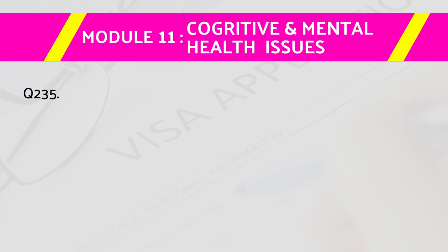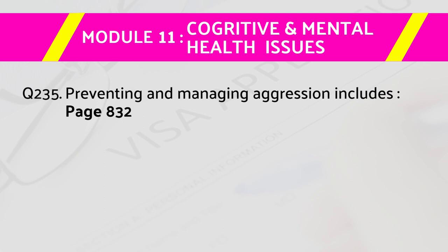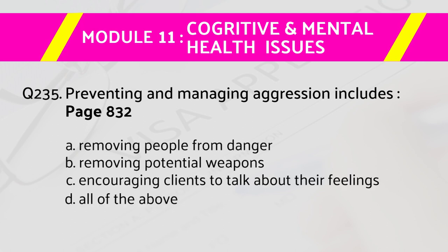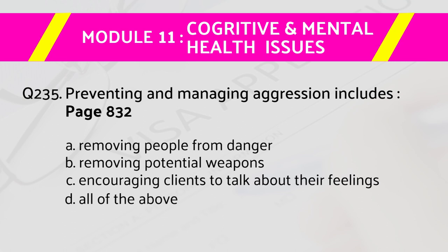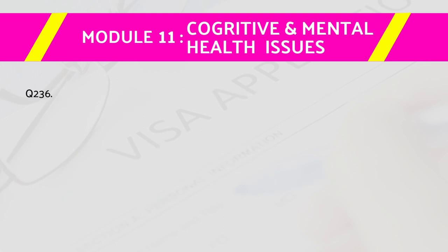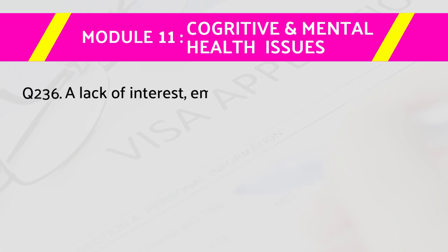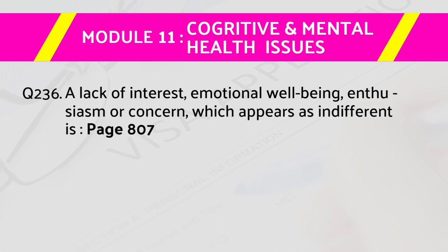Question number 235: Preventing and managing aggression includes — page number 832. Answers are: a) removing people from danger, b) removing potential weapons, c) encouraging clients to talk about their feelings, d) all of the above. The right answer is d) all of the above.